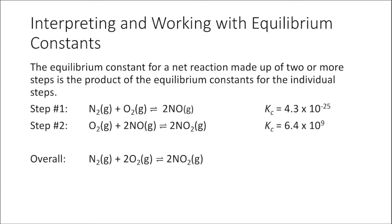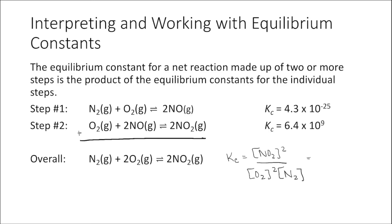Let's look at how this works. First, let's write the equilibrium constant expression for our overall reaction. That equilibrium constant equals the concentration of NO2 squared divided by the concentration of O2 squared times the concentration of N2. I want to find this value. Notice that adding these two individual steps together gives us this overall equation, so let's write the equilibrium constant expressions for step one and step two.